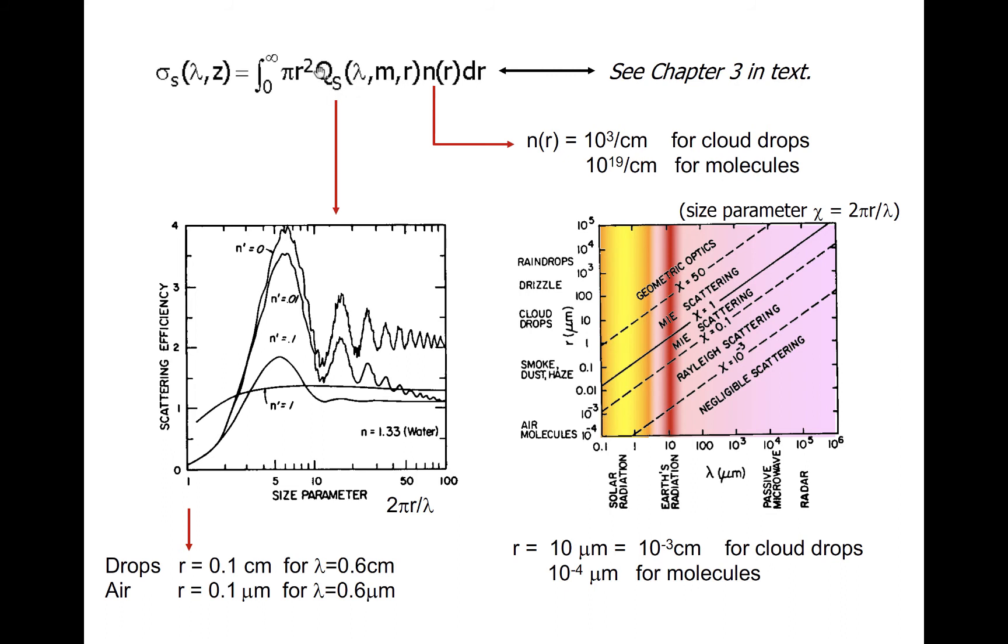The scattering efficiency is depicted by the plot at bottom left, which shows how q varies as a function of size parameter. You might recall that the size parameter is related to the ratio of the circumference of a scatterer to the wavelength of the radiation interacting with the scatterer. The scattering efficiency is a complicated-looking function that also depends on the imaginary component of the index of refraction, m prime, which is just related to the absorption properties of the scatterer, so that the smaller m prime, the less absorption there is.